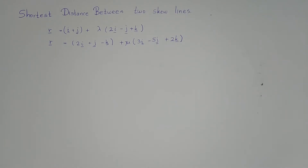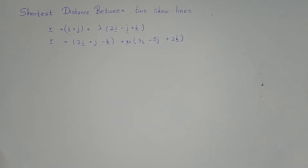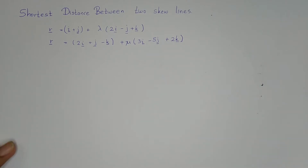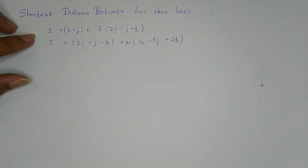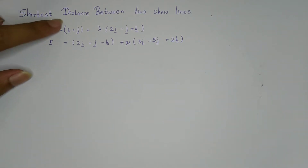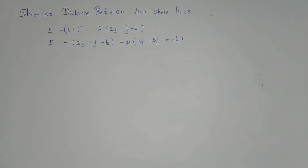If you are new to the channel please don't forget to subscribe. If you'd like to watch other videos regarding these vector questions, I've given the link in the description. In this video we are going to discuss these two skew lines and find the shortest distance between them. As it's a 3D problem we need to think in 3D, which is a little bit more difficult than previous questions.